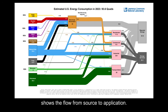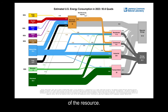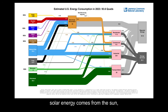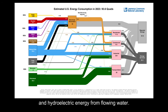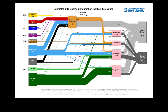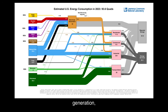Renewable energy is defined by the origin of the resource. For example, solar energy comes from the sun, wind energy from the wind, and hydroelectric energy from flowing water. Applications such as electricity generation, heating, transportation, or rural